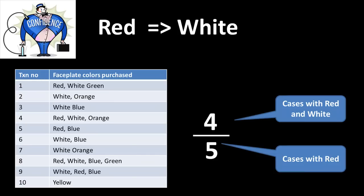On the other hand, suppose we looked at a rule red implies white and found that red occurs in 5 of the cases, but only in one of those cases does white occur — in which case you would say you don't have much confidence in that rule. Whereas what we have seen here is a very good rule. Ideal would be 100% — that in all cases when red occurs, white also occurs — but we don't look for perfection. So that's the notion of confidence of a rule.